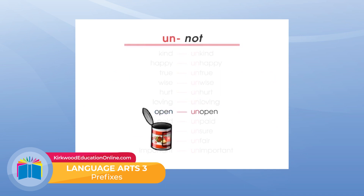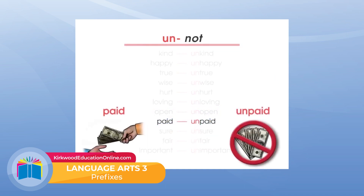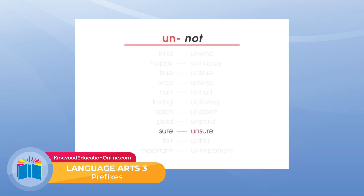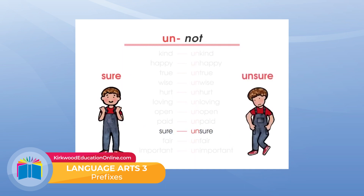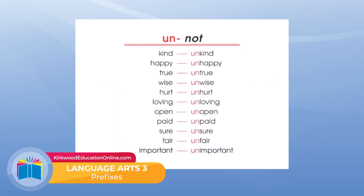'Open.' Unopen means the opposite of open. 'Paid.' Unpaid. The bill was paid; the bill is unpaid. 'Sure.' Unsure. He was very sure about himself, or he was unsure — he was not sure. 'Fair.' Unfair. 'Important.' Unimportant.